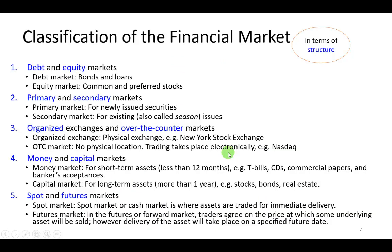One way we can classify the financial markets is in terms of its structure. We can describe it as a debt market or an equity market. A debt market is a market for individuals who wish to lend and those who wish to borrow, while an equity market refers to the market for those who wish to invest and become part owners or even whole owners of a firm.